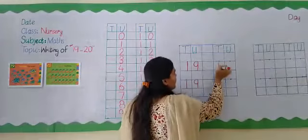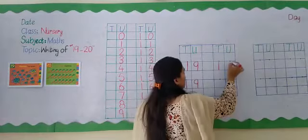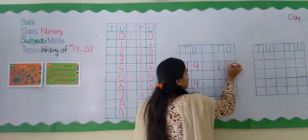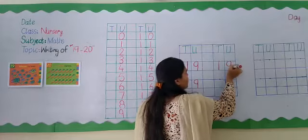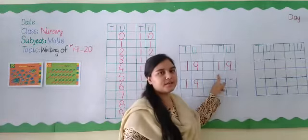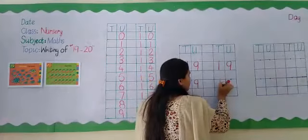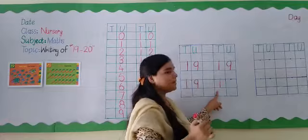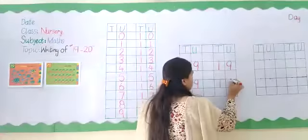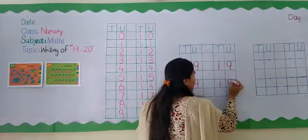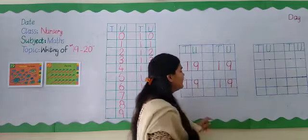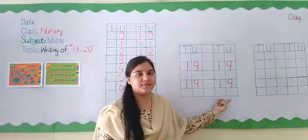Go down and down for 1. Make a curve C. Go up, come down and down for 9. That's 19. 1, 9 makes 19. Go down and down for 1. Make a curve C. Go up, come down and down for 9. What do we write? 19. Very good.